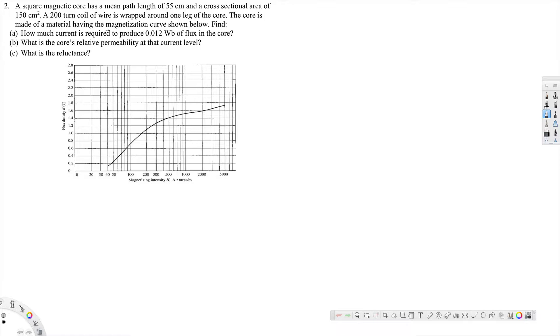The core is made of a material having the magnetization curve shown below. Part A: How much current is required to produce 0.012 weber of flux in the core? So here we are required to find out the current.